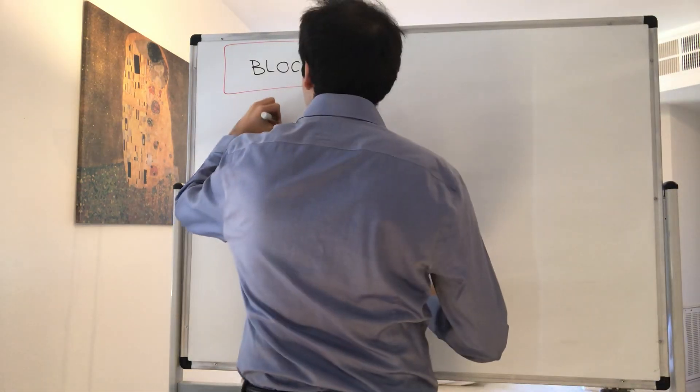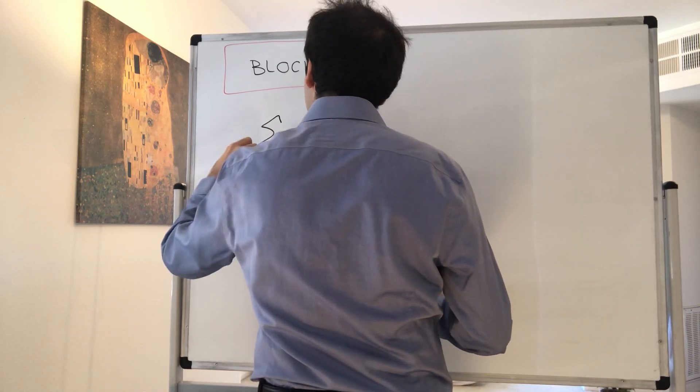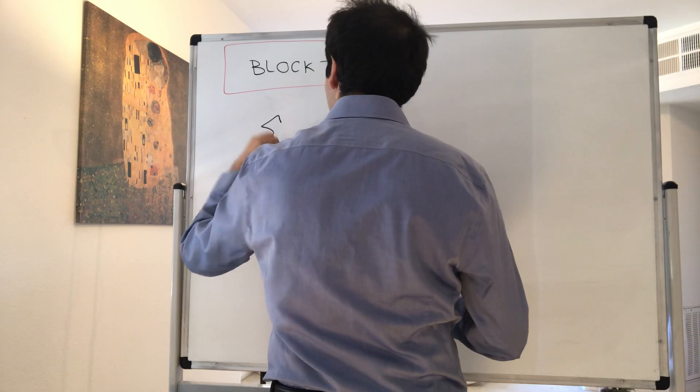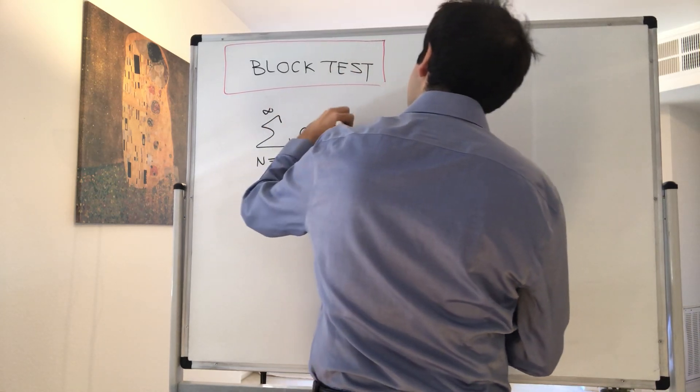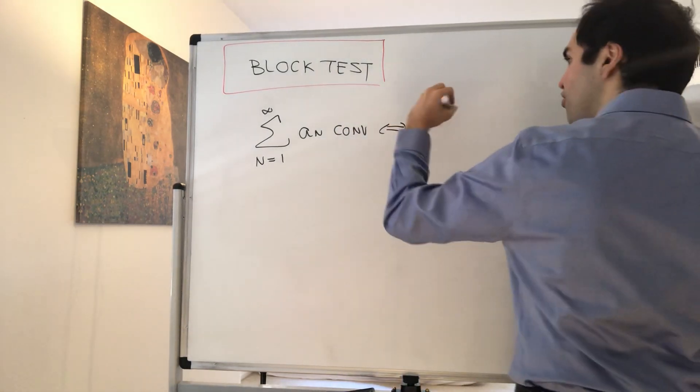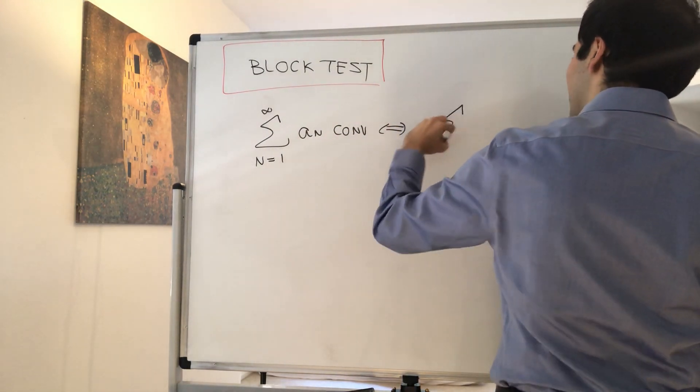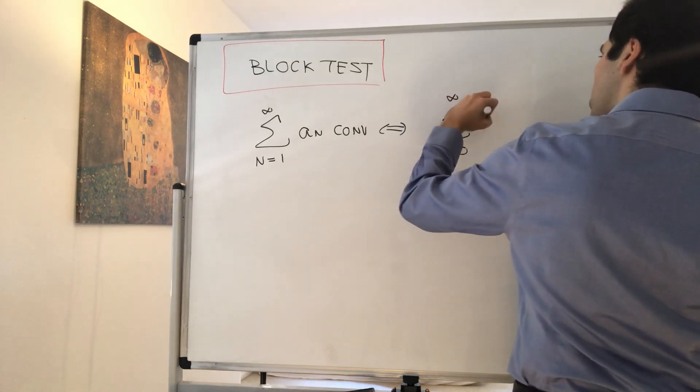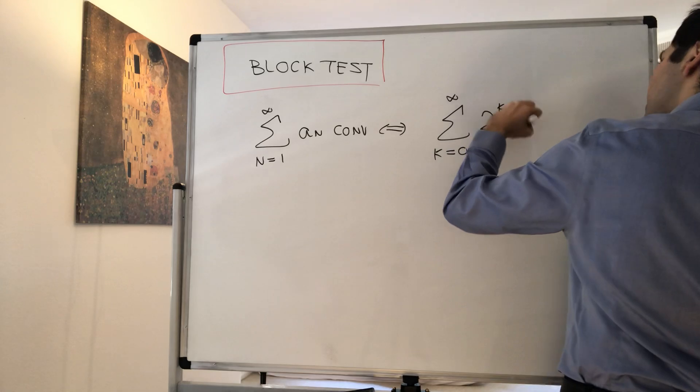And it simply says the following: it says that a series converges, so sum from n equals 1 to infinity a_n converges, if and only if the following new and cool series converges: the sum from k equals 0 to infinity of 2^k times a_(2^k).